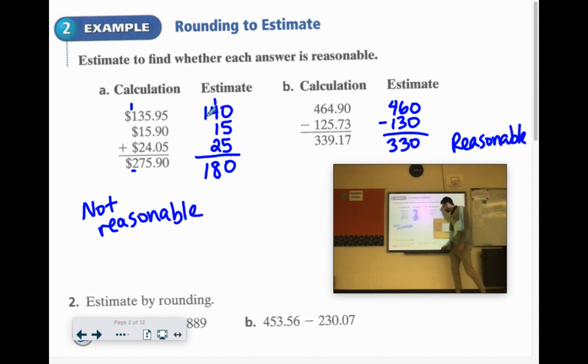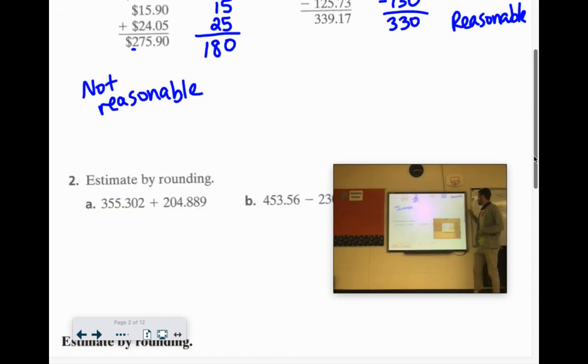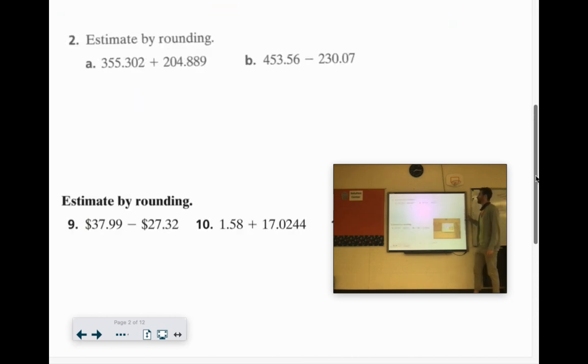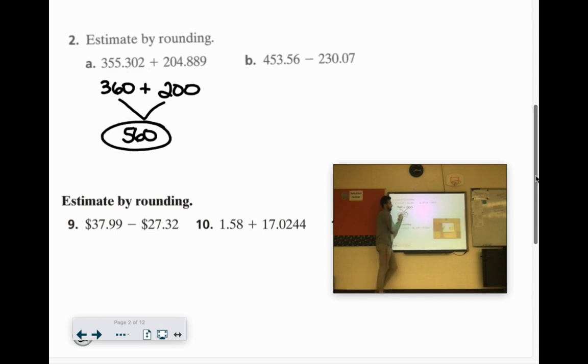We're trying to do as much as we can in our brain to quick check our answers. Because sometimes, you know, you just put stuff wrong in a calculator or make mistakes. It happens. Estimate by rounding 355.302 plus 204.899. Let's call this 360. Now I bumped that up a little bit. So I could bump this down to 200. And that would be two easy numbers to work with. 360 plus 200 would be about 560. That's a pretty good estimate.